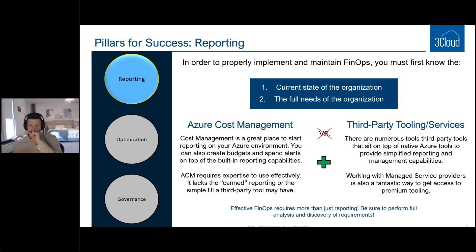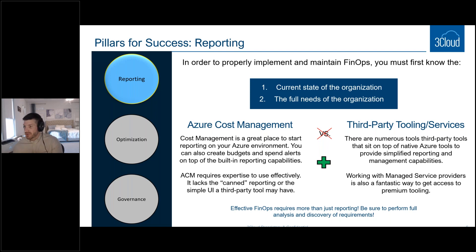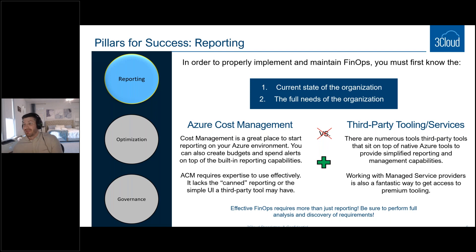Starting with reporting: before you can really implement FinOps or start saving money, you need to know two things — what does your organization look like right now, and what are the future needs of your organization? Azure has a great built-in tool called Azure Cost Management, which is a great place to start. You can do neat reports, set budgets, and configure spend alerts so you don't get a surprising bill. That said, Azure Cost Management does require expertise to set up effectively. It doesn't have canned reporting — you have to build all those templates yourself. That's why we recommend adding third-party tooling or services on top of it.